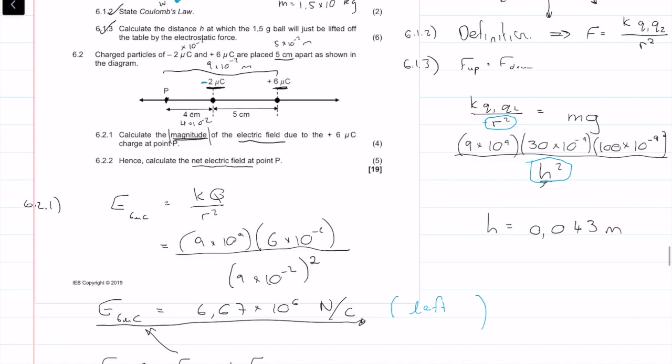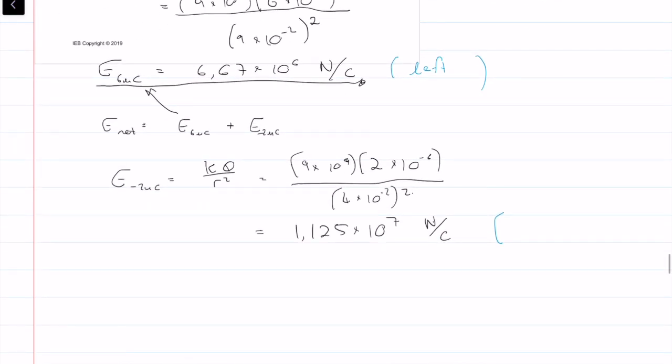This one is a negative point charge, so it's going to be inwards. It's going to be pulling everything in, whereas this is pushing everything out. This one is pulling everything in. On P, it's going to pull P that way to the right.